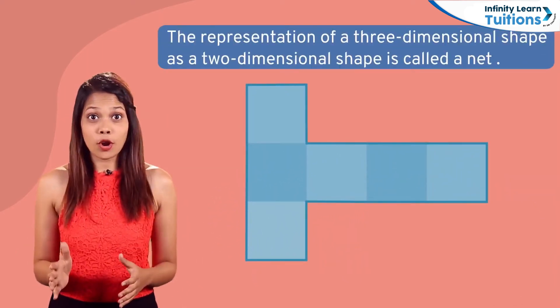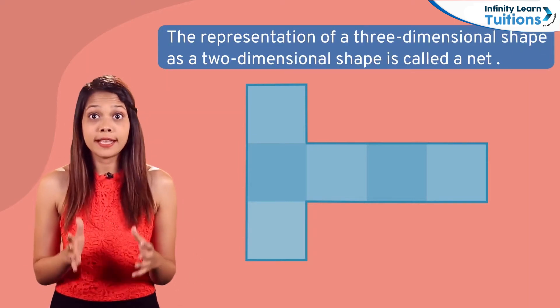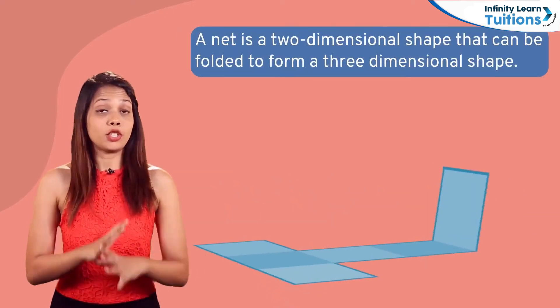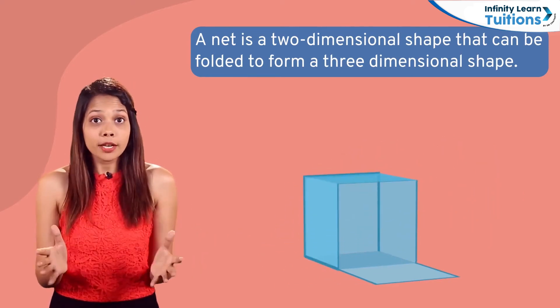This representation of a three-dimensional shape as a two-dimensional shape is called a net. Alternatively, a net is a two-dimensional shape that can be folded to form a three-dimensional shape.